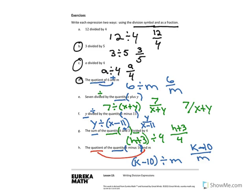If you did well and were able to get those, your next assignment will be through a new thing called assessments. You'll be able to do the problem set and get immediate feedback to see if you did it right. Remember, when you're writing the fractions and typing them in, you do k minus 10 slash m — the slash is a division symbol, it's your fraction bar, it's your divided by. Good luck.